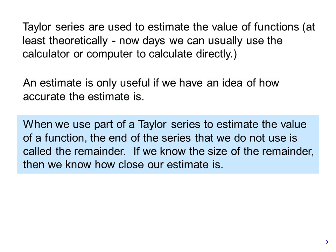When we use part of a Taylor series to estimate the value of a function, the end of the series that we do not use is called the remainder. If we know the size of the remainder, then we know how close our estimate is.